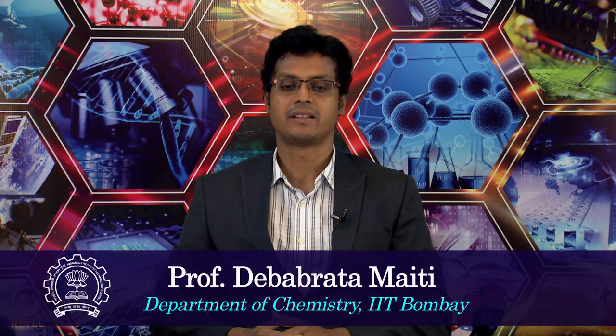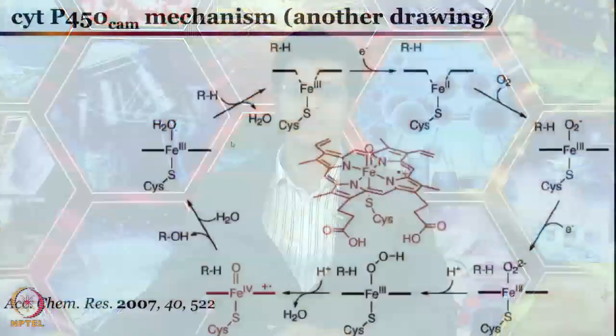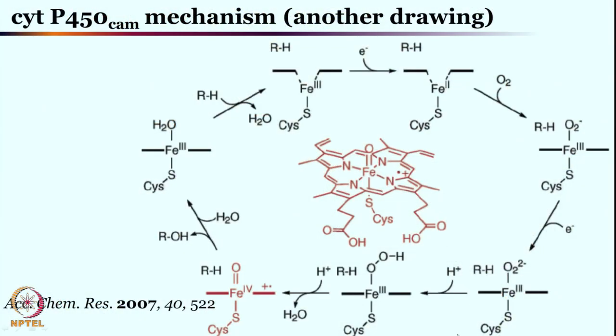Welcome back to the discussion of Cytochrome P450. In the last class we have seen the reaction mechanism — a really exciting mechanism where iron hydroperoxo is formed, and then the oxygen-oxygen bond is cleaved to give the high-valent iron oxo species.